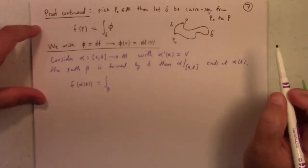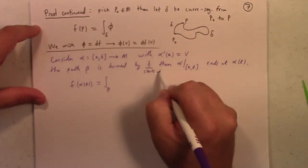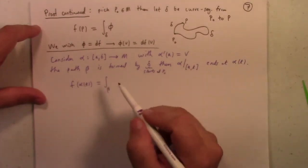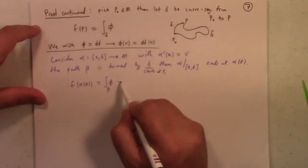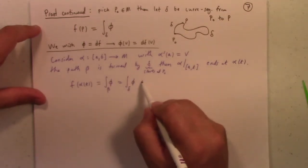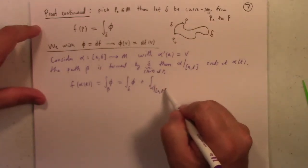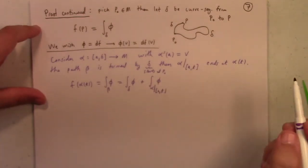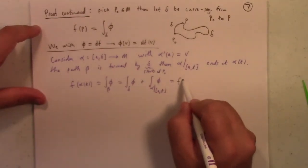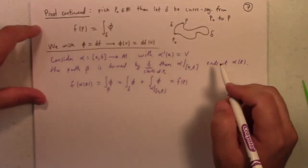Okay, so it goes from, this starts at P not. So using path independence again, we can just put beta there. But the integral over beta is actually the integral over delta using additivity of the integral plus the integral of alpha restricted to A to T of A to T. That path. Of course, by definition, the first one is F of P. I'm still talking about that specific path delta.